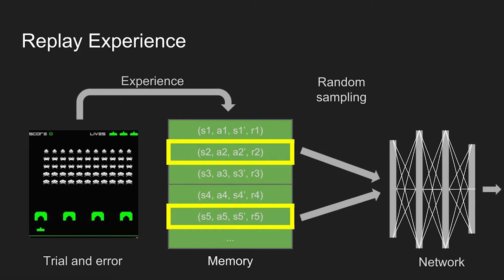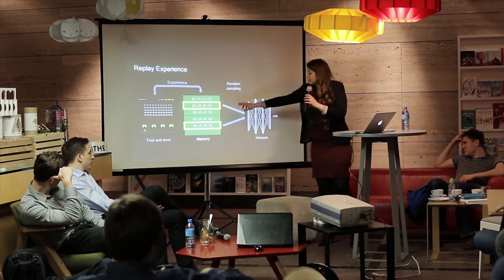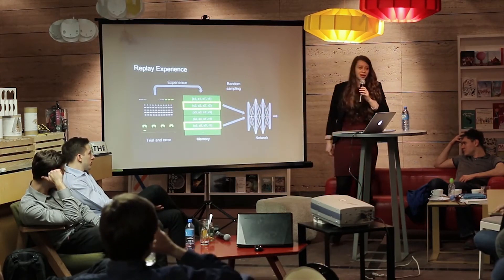Here's a nice visualization of how experience replay works. This is actually the input that people feed into networks — no encoding, nothing, just put it there and it manages everything. We store it in memory and then randomly choose samples to put into the network. That way we have much smoother training.